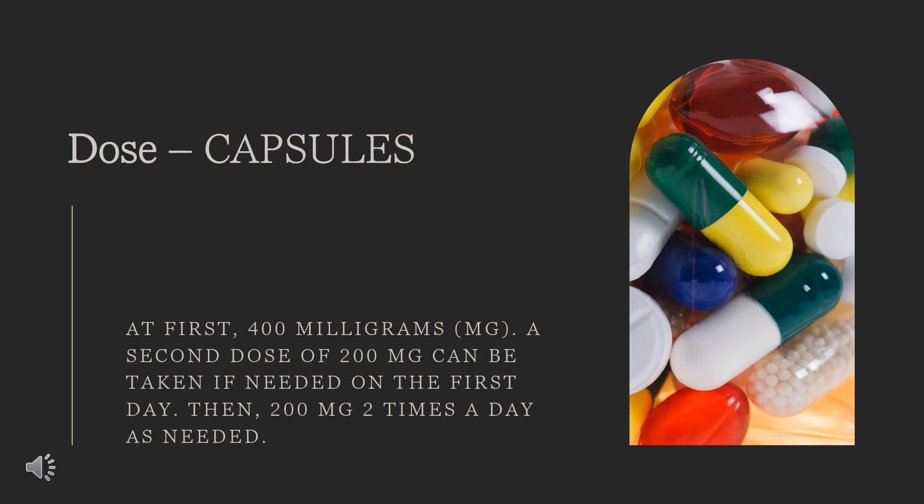Children 2 years of age and older weighing less than 25kg: dose is based on body weight and is usually 50mg twice a day. Children younger than 2 years of age: use and dose must be determined by your doctor. For oral dosage form solution, for acute migraine with or without aura: Adults, 120mg once a day. Your doctor may adjust your dose as needed and tolerated. Children: use and dose must be determined by your doctor.